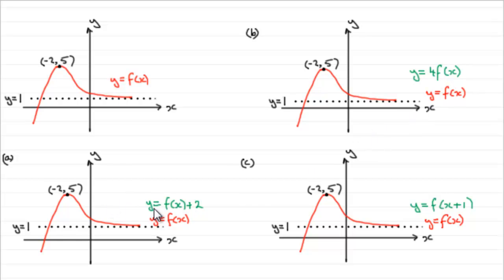First of all, in part a, we've got to draw y equals f of x and then plus 2. What this is going to do is translate the graph of y equals f of x by 2 units, up 2 units, parallel to the y-axis.